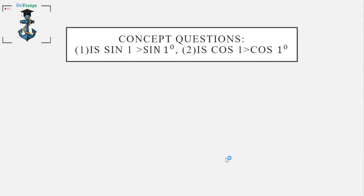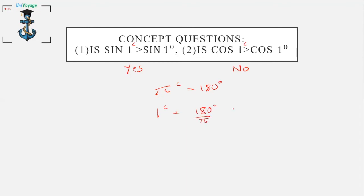Here are two questions to strengthen your concepts — I'll give you the answer but you need to explain why. Is sin(1 radian) > sin(1°)? Answer: yes. Is cos(1 radian) > cos(1°)? Answer: no. Hint: 1 radian ≈ 180°/π ≈ 57.3°. Share your reasoning in the comments.